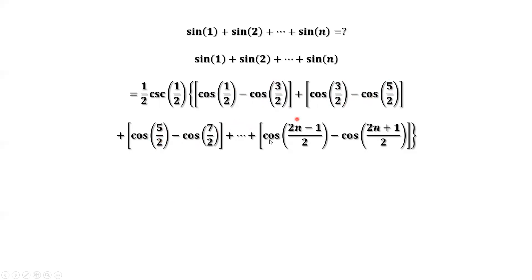Similarly, cancel this one, cancel this one. Only thing left are cosine of one half minus cosine of two n plus one over two. Only two terms are left. The first one, the last one with the negative sign.